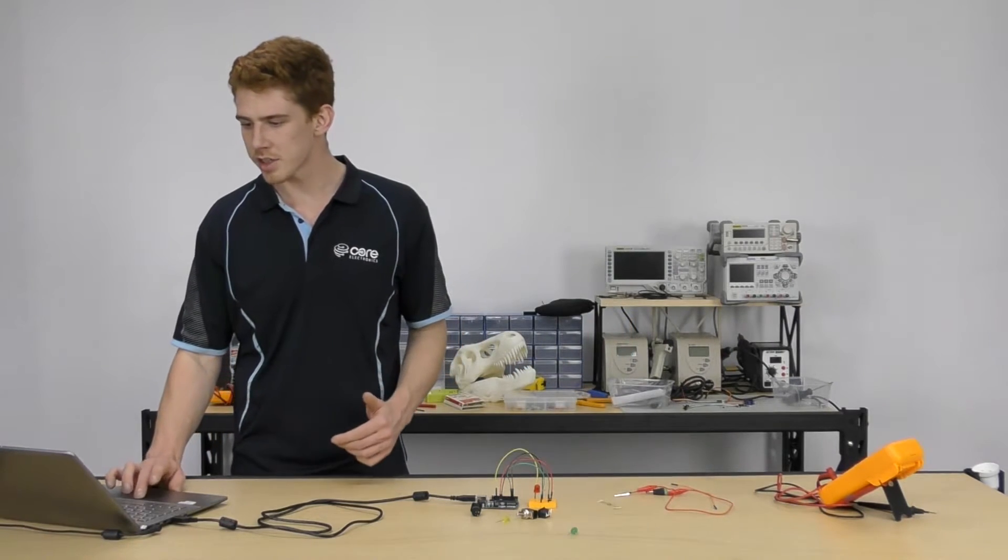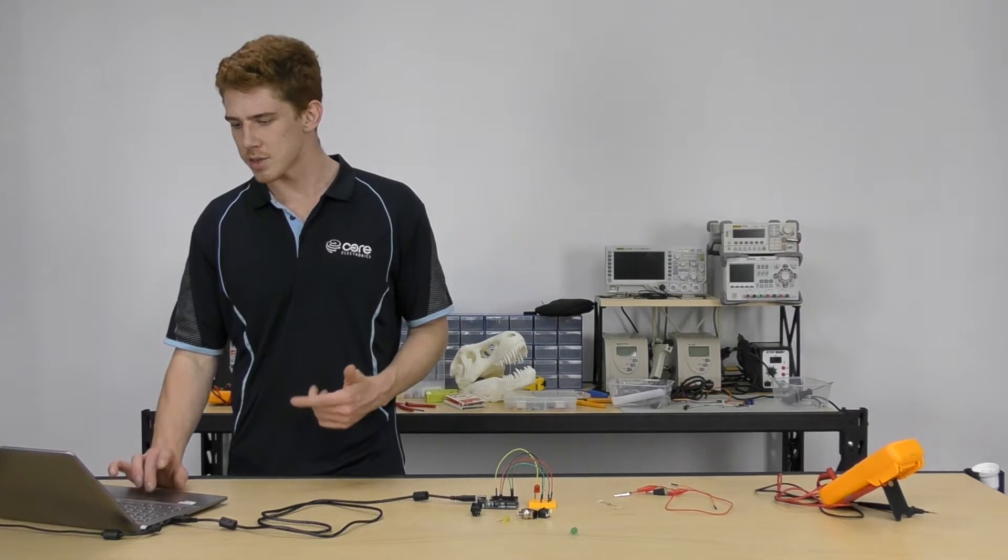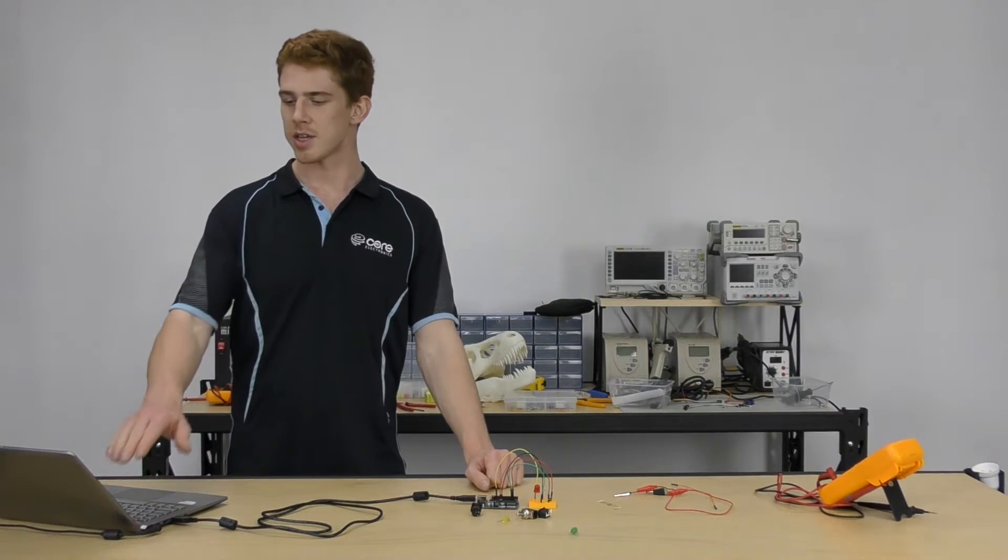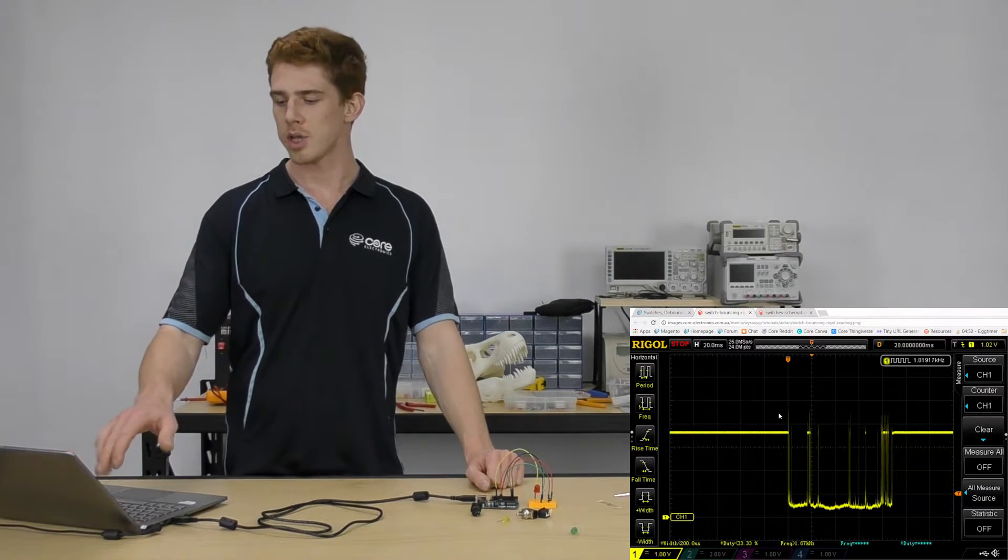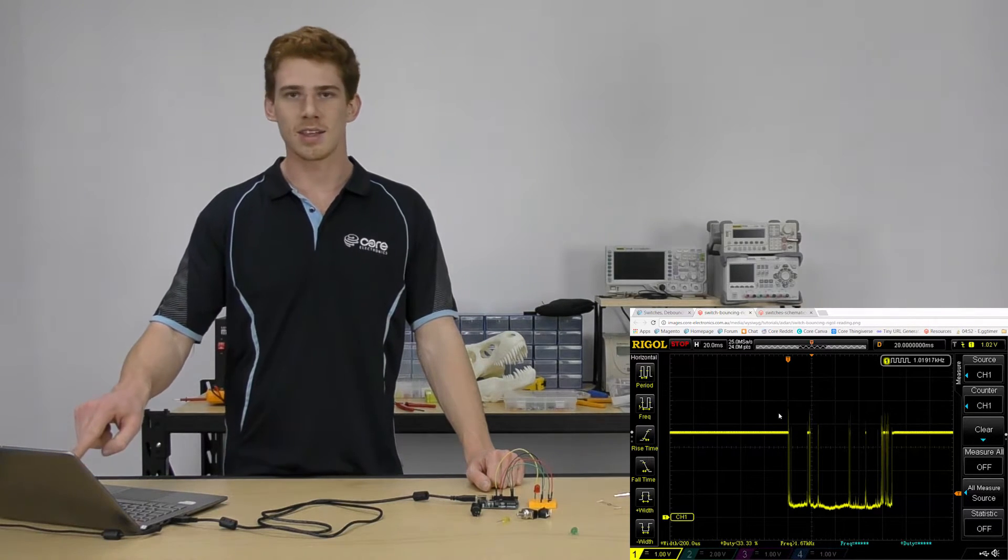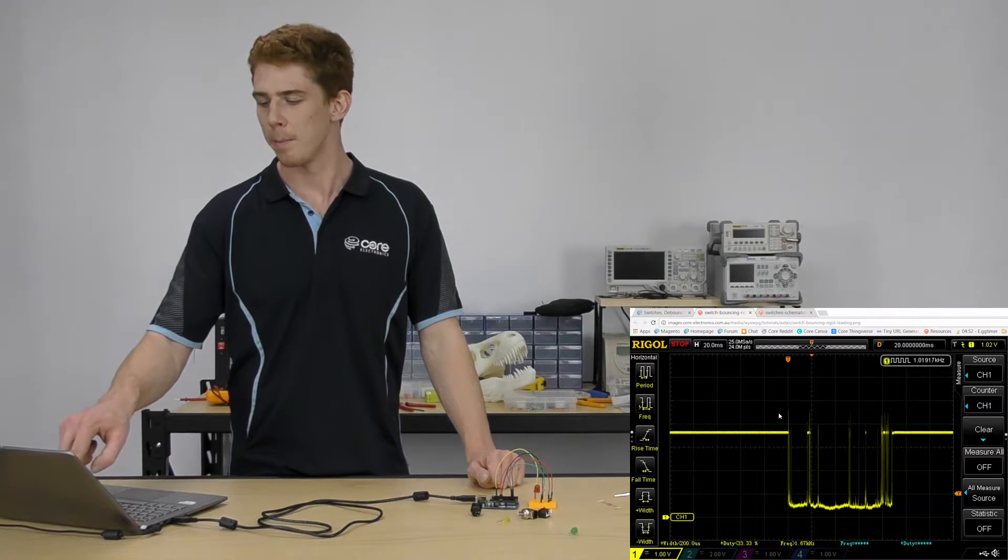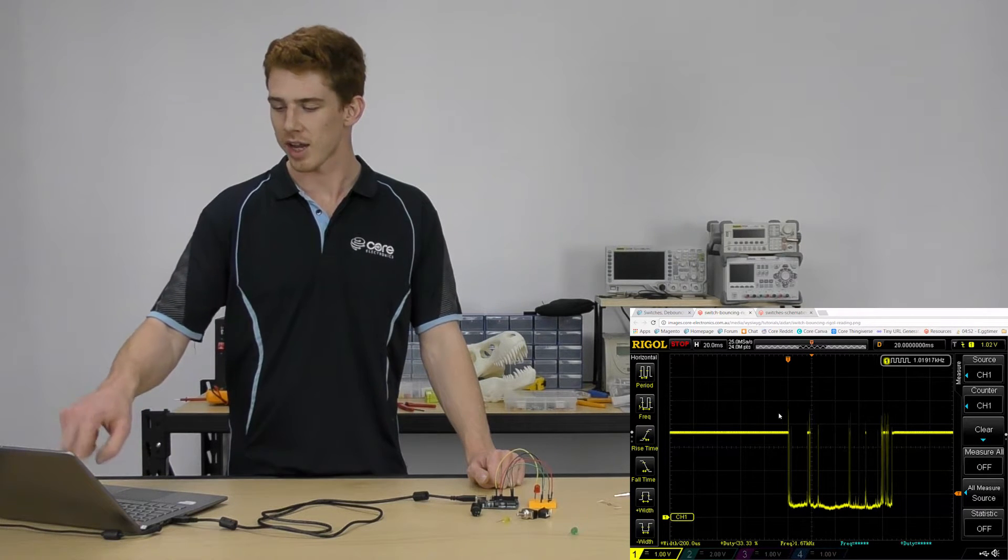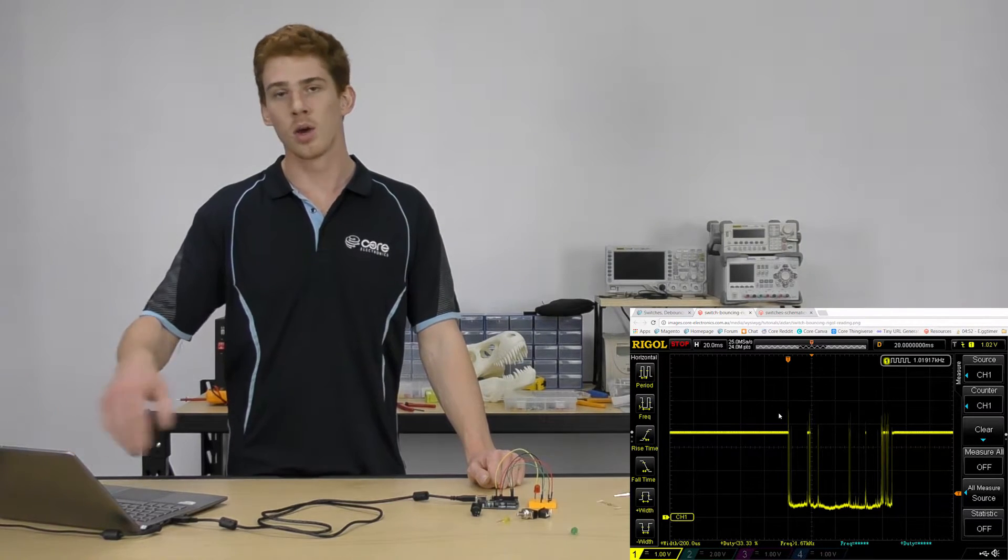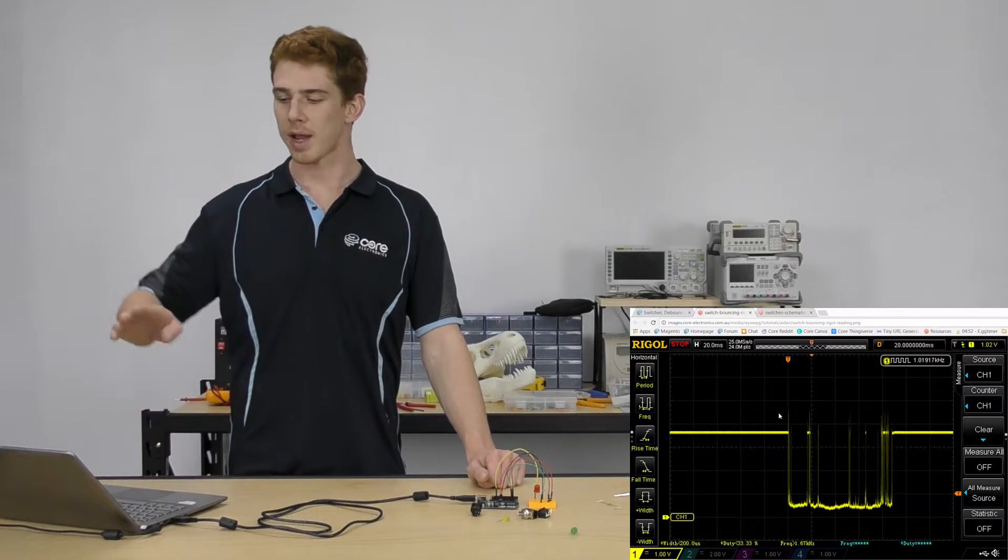I've got an oscilloscope reading here that we can take a quick look at, and it's a pretty good representation of that. You can see that the switch is pulled high, and when you press it, it is not anything close to what you would expect. It's not a nice neat square wave, it actually bounces quite a bit, and you can see it even comes straight back up all the way back up to the high voltage level and back down.